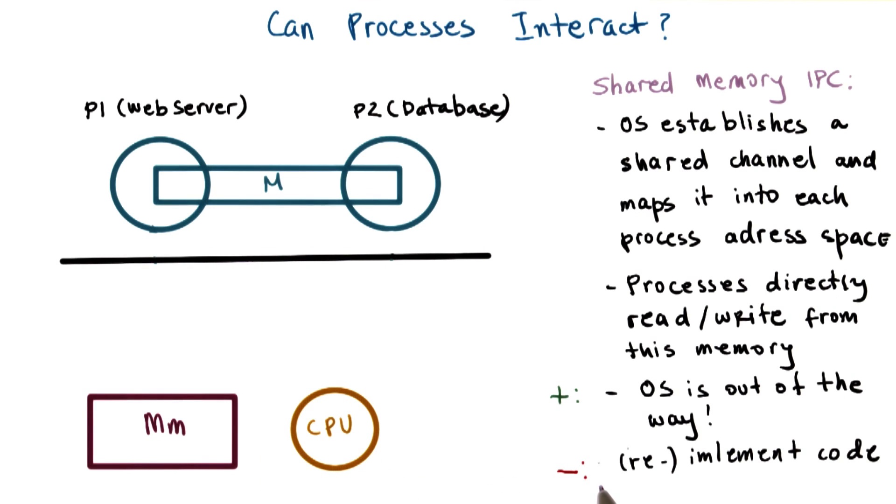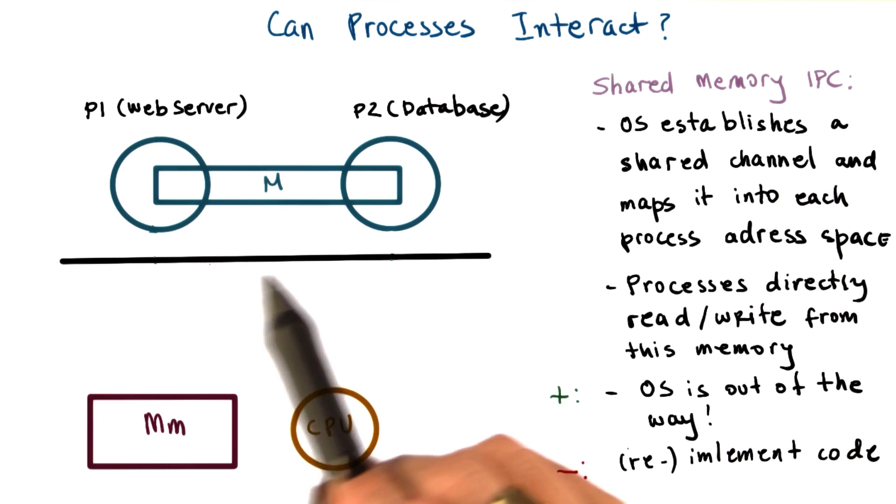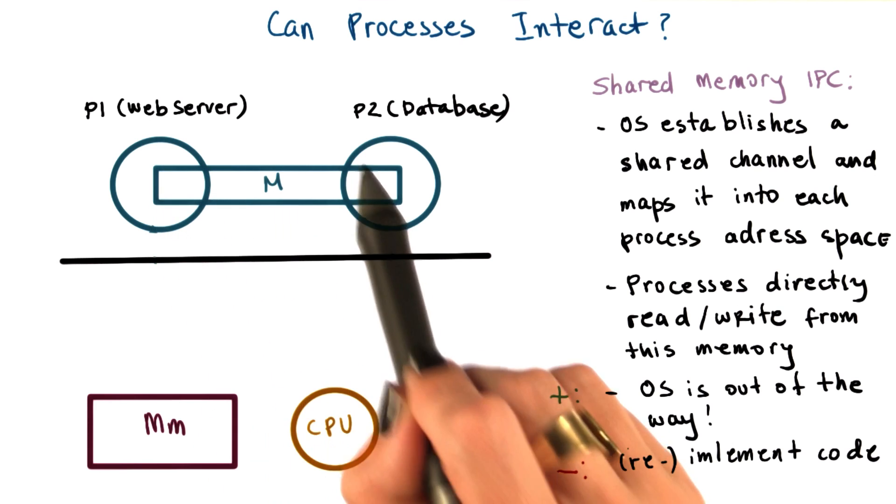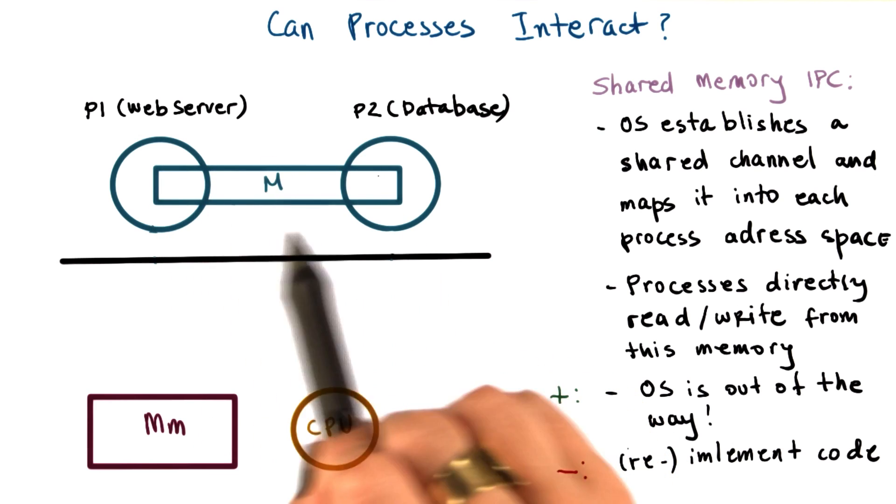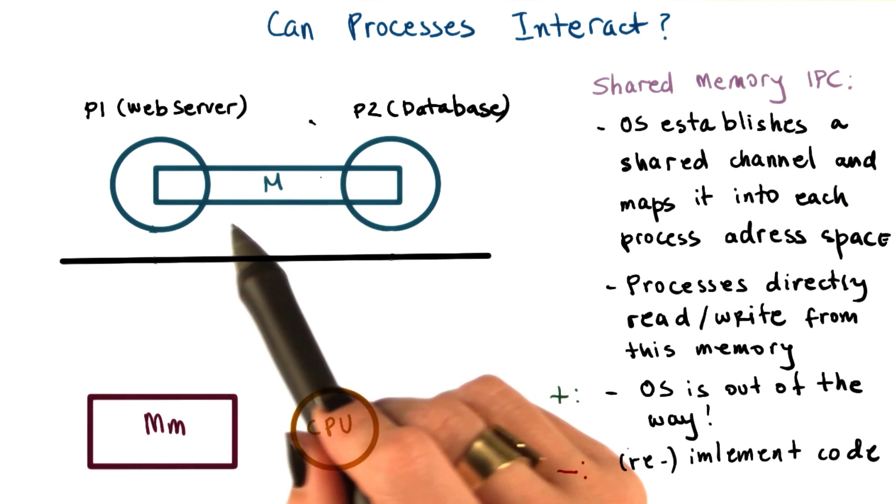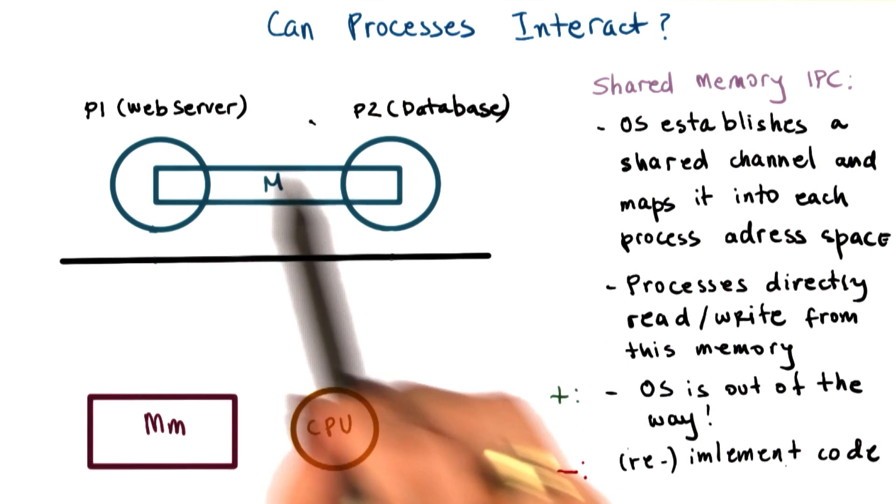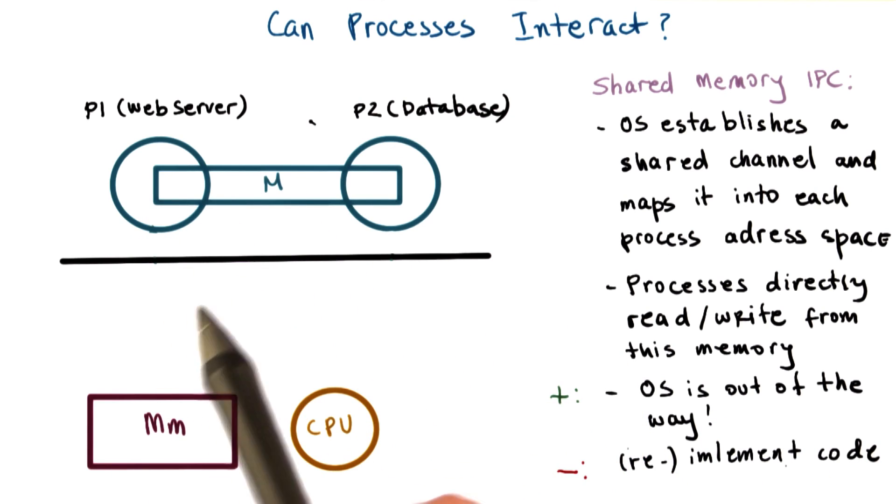The disadvantage of this approach is because the operating system is out of the way, it no longer supports fixed and well-defined APIs for how this particular shared memory region is used. For that reason, its usage sometimes becomes more error-prone or developers simply have to re-implement code to use the shared memory region in a correct way.